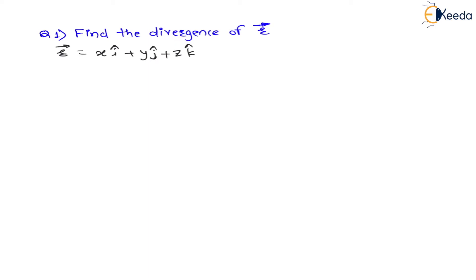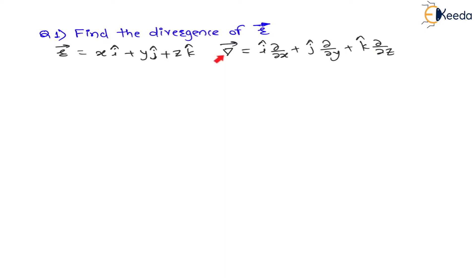Here we will be using the del operator. This del operator is nothing but î(∂/∂x) plus ĵ(∂/∂y) plus k̂(∂/∂z). The dot product of this del operator with this vector is nothing but divergence. So let us find this dot product.